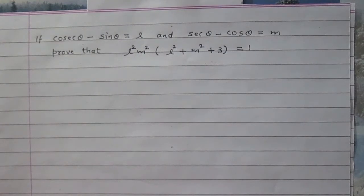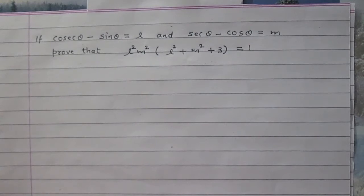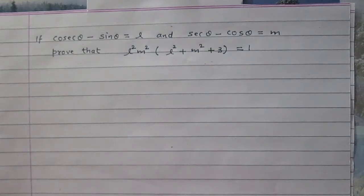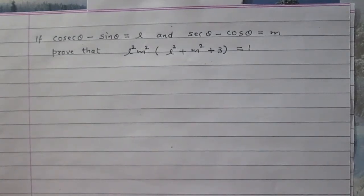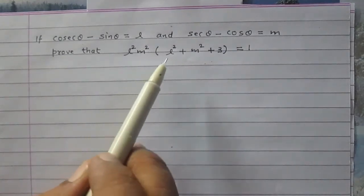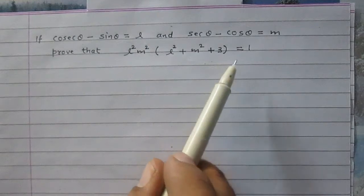If cosec theta minus sine theta is equal to l, and sec theta minus cos theta is equal to m, then prove that l squared multiplied by m squared multiplied by the sum of l squared plus m squared plus 3 is equal to 1.